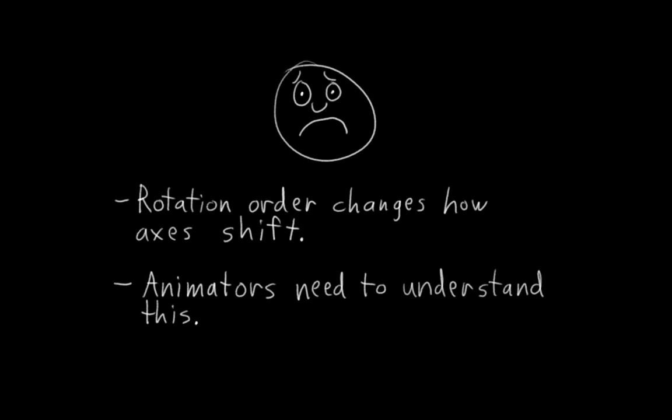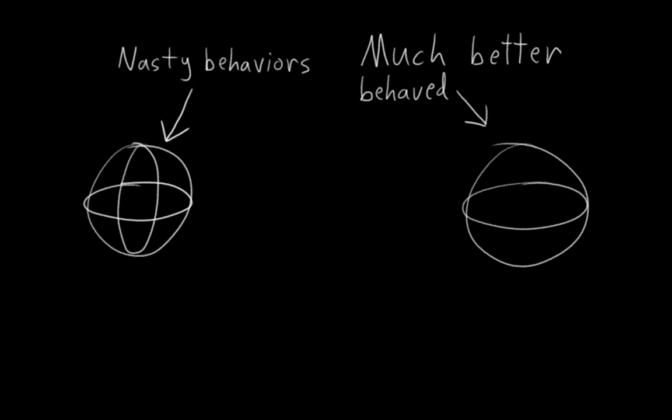A couple of final notes about Eulers. First, if you have one of the axes locked, so that you're only rotating on two of the axes, then Eulers are much better behaved. A lot of the nasty behaviors of Euler rotations, such as Gimbal Lock, come from rotating on all three axes. So if you only need to rotate on two axes, simply lock one of the axes, and a lot of Euler's rotation problems will disappear.